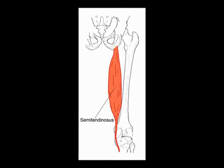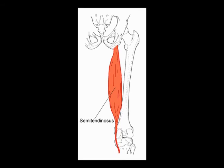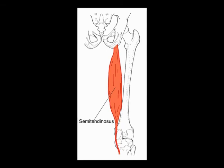And the concentric actions of the semitendinosus muscle are hip extension, knee flexion, medial rotation of the tibia when the knee is flexed, and medial rotation of the thigh when the hip is extended.